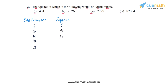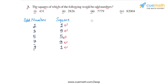7 squared is 49, so you get 9, and 9 squared is 81, so you get 1. So for any odd number, the ending digit of the square could be 1, 9, 5, 9, or 1 — all of these are also odd. This helps us conclude that the square of any odd number will also be an odd number.